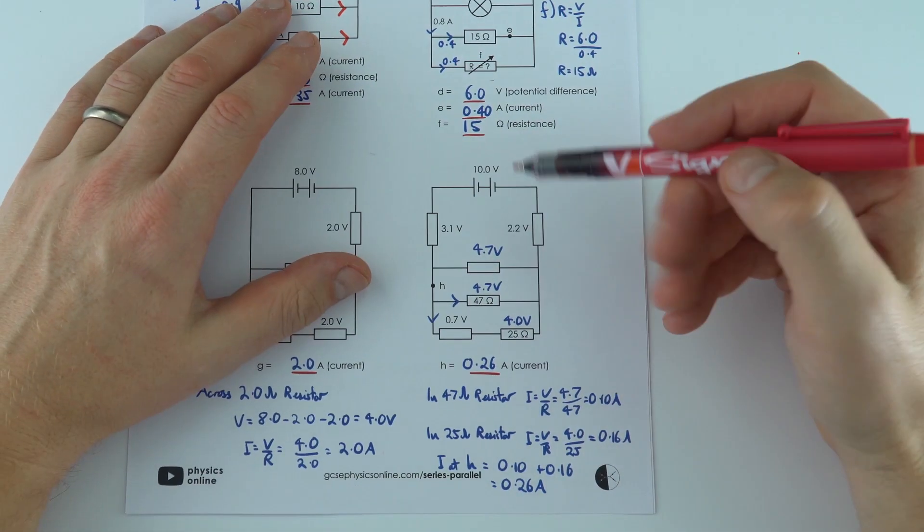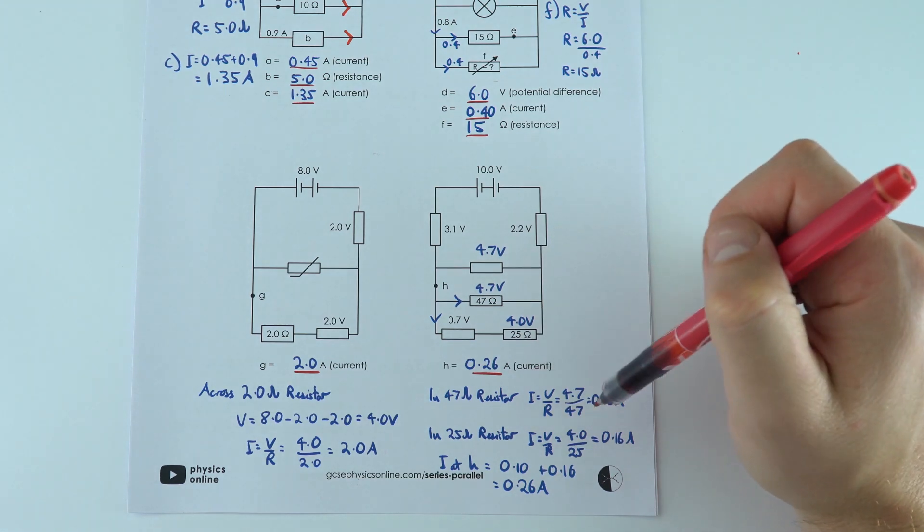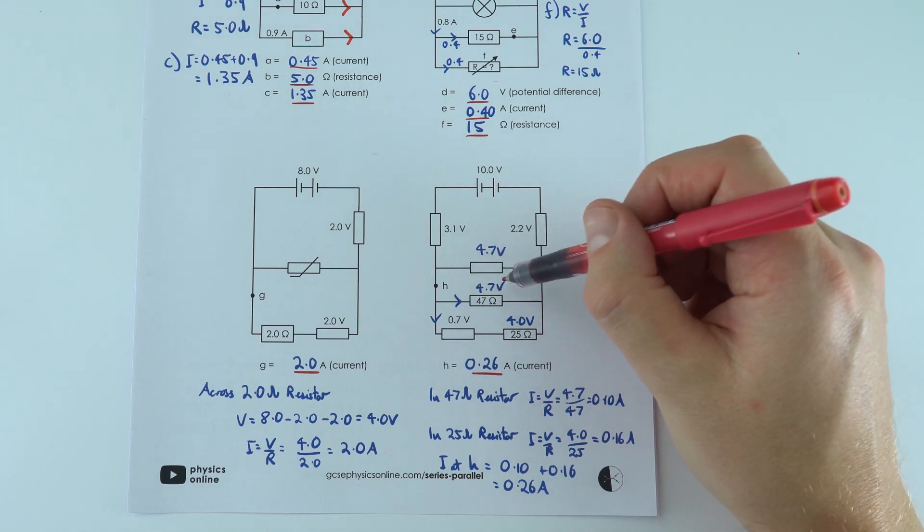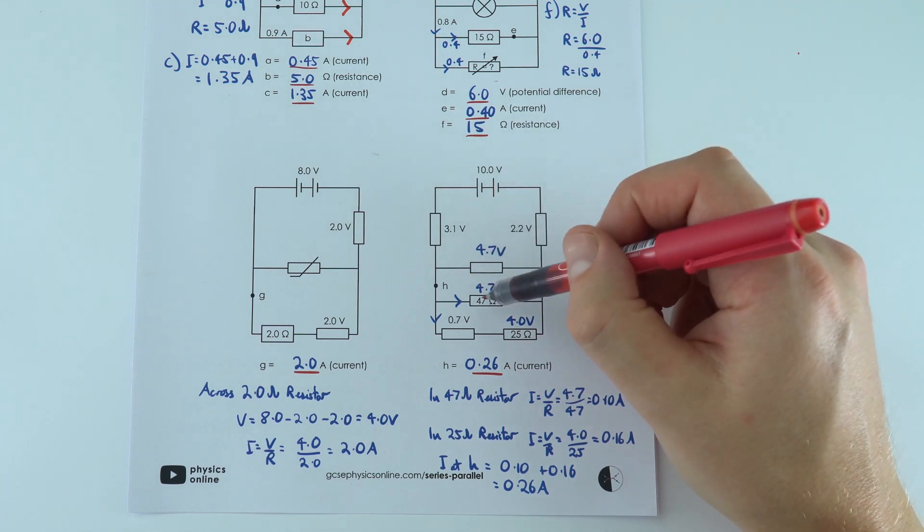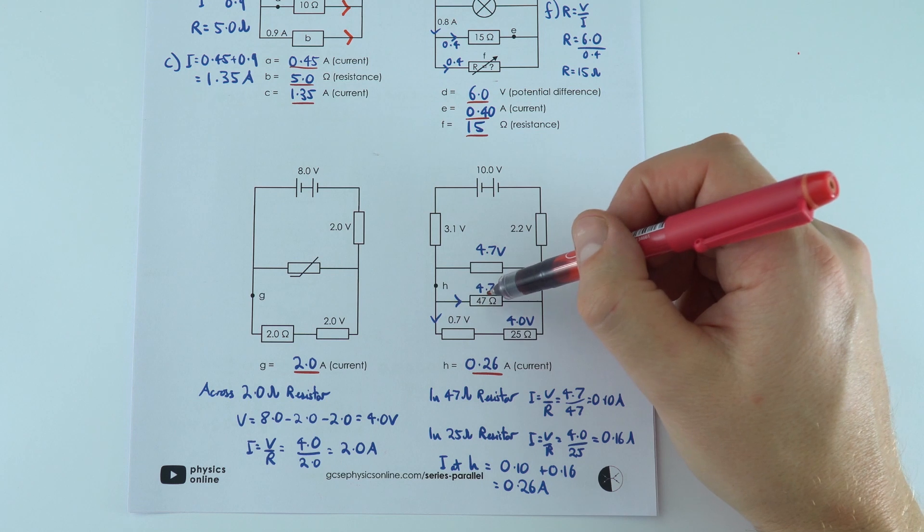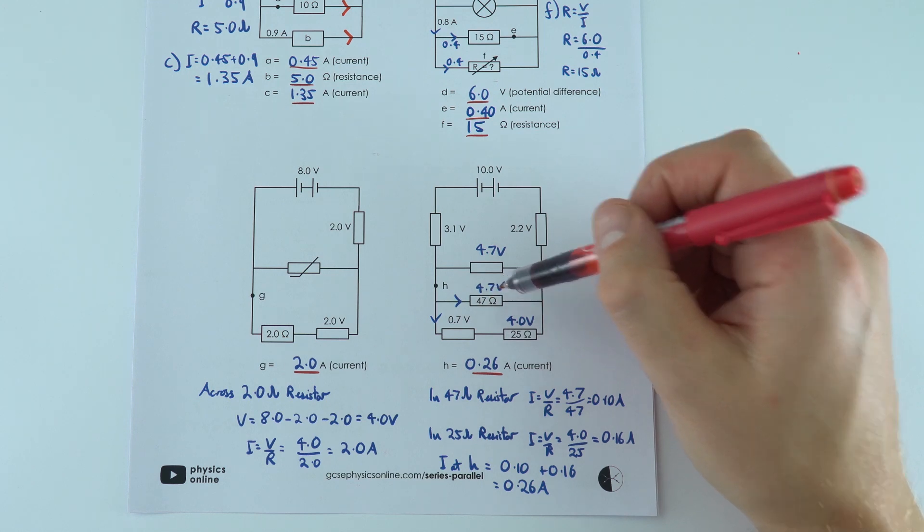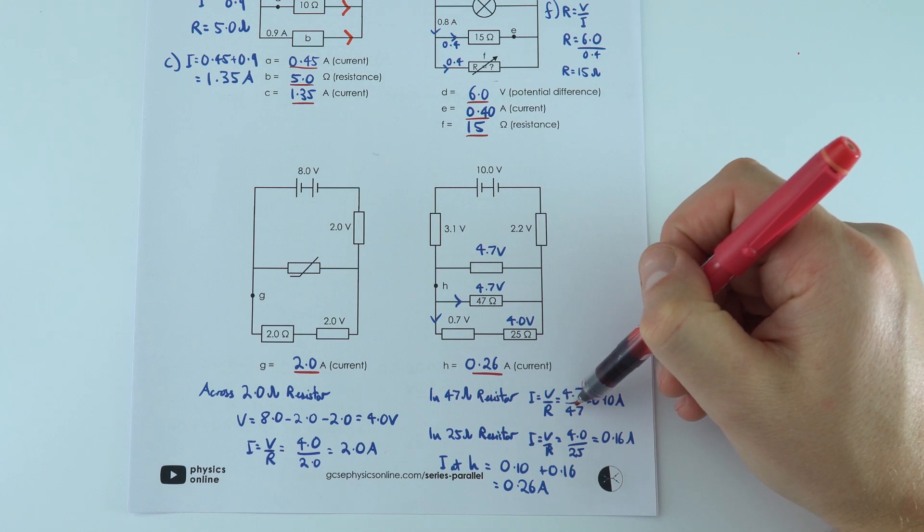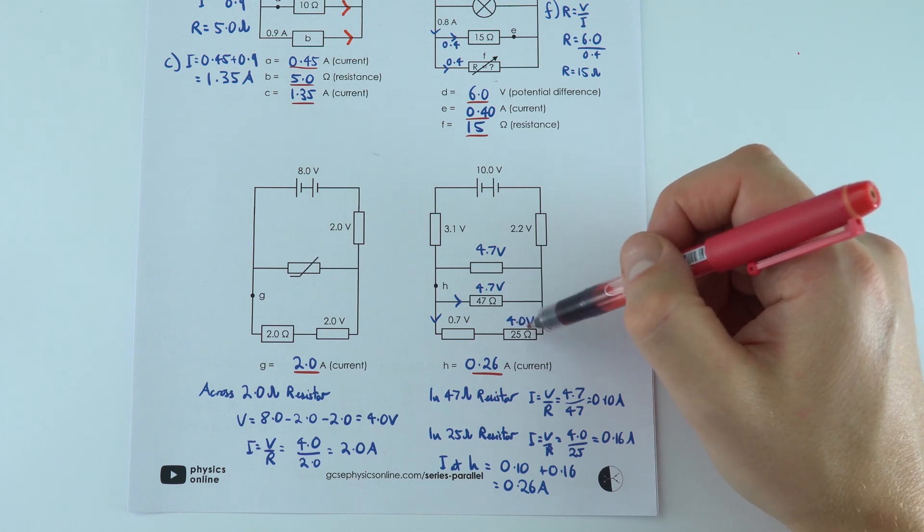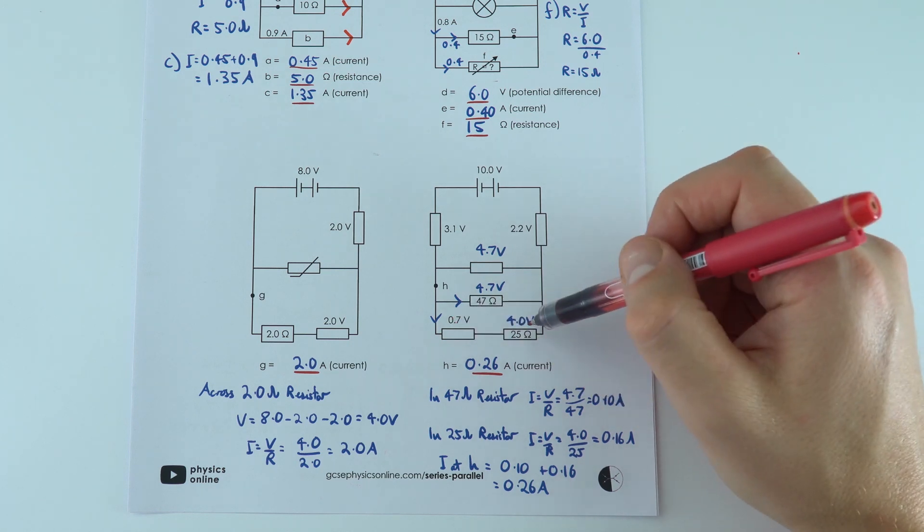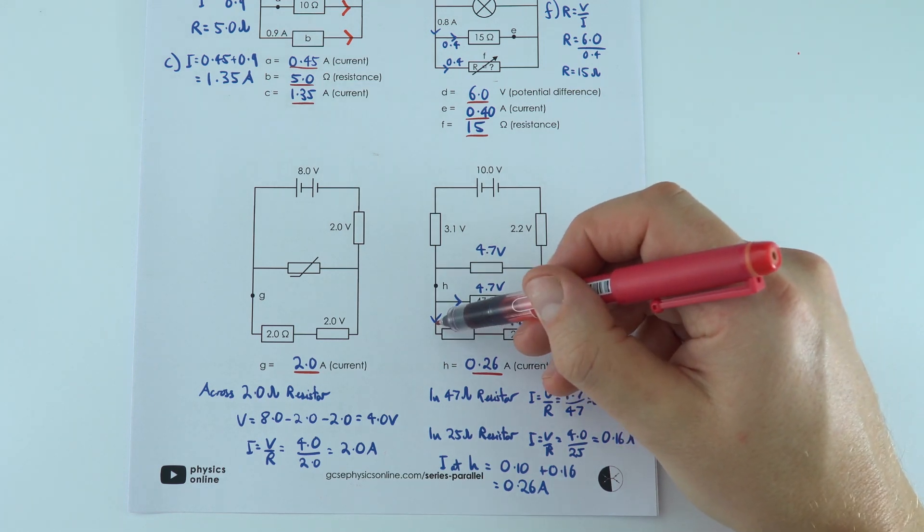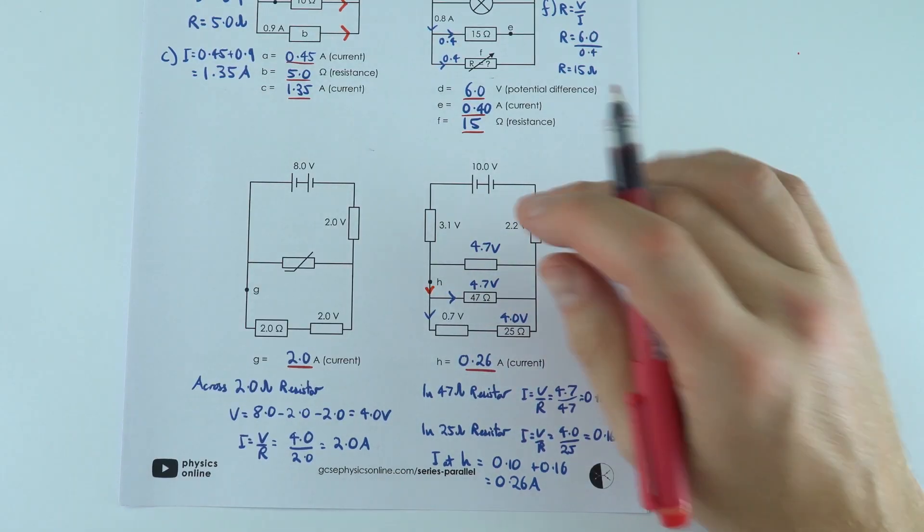And for this one over here, what I had to do was work out the current in different parts of the circuit. Now there's going to be 4.7 volts across this resistor, there's also going to be 4.7 volts across this resistor. So what we can now do is we can work out the current in the 47 ohm resistor, because we know the potential difference is 4.7, the resistance is 47, giving a current of 0.10 amp. And then over here, we know across this component, if there's 0.7 volts across that, that leaves 4 volts across the 25 ohm resistor, again we can work out the current. We add the current here to the current here to work out the current in H.